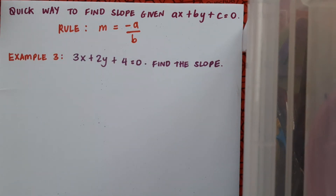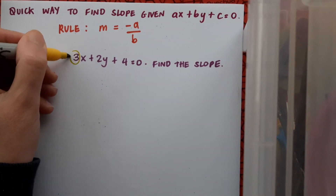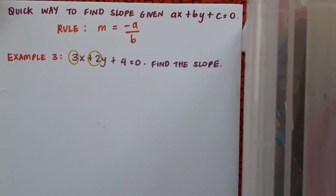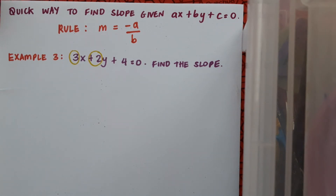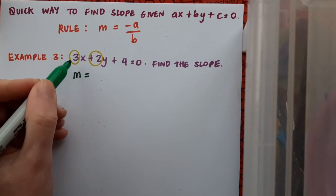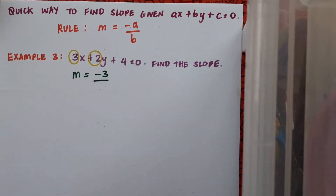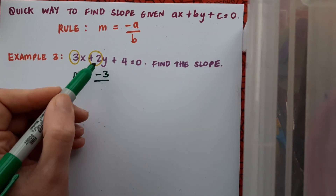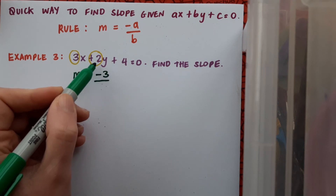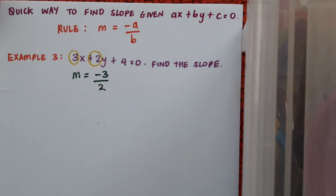In practice, you look at the coefficient of x, change its sign, and put that on top; then look at the coefficient of y, leave it exactly as it is, and put it on the bottom. For example, given 3x plus 2y plus 4 equals 0 and we want the slope: the coefficient of x is 3 and the coefficient of y is 2. I change the sign of the x coefficient from plus 3 to minus 3, and put it over the y coefficient as it is — which is 2. So the slope is minus 3 over 2, straight away.